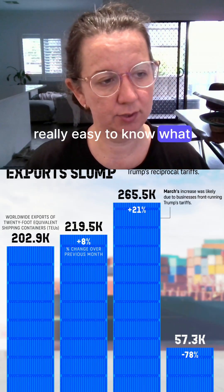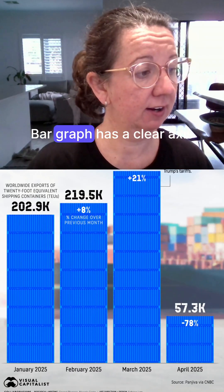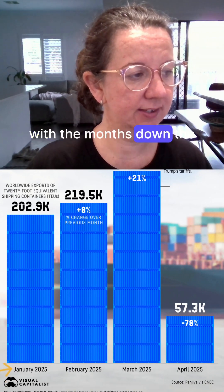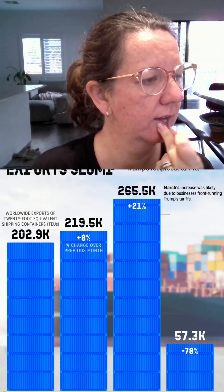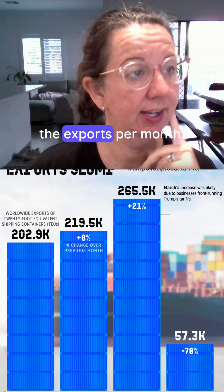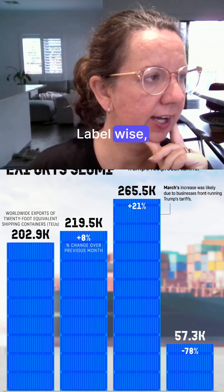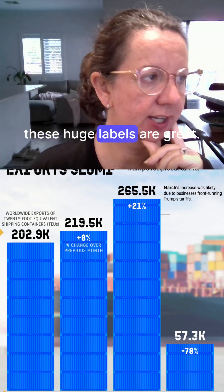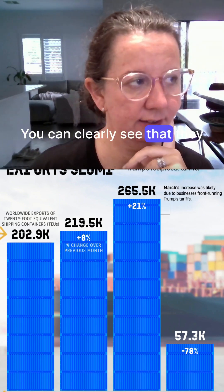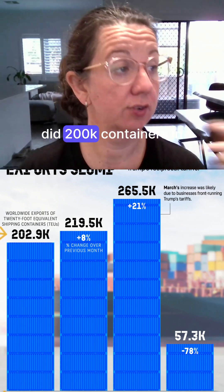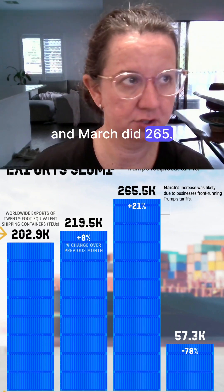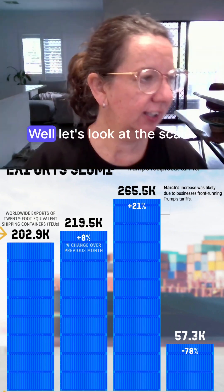Clarity-wise, it's really easy to know what this is about. The bar graph has a clear axis with the months down the bottom, and the stacks show us the exports per month. Label-wise, these huge labels are great — you can clearly see that they did 200k containers in January and March did 265k.